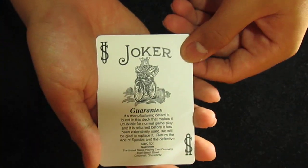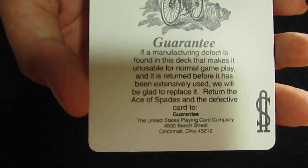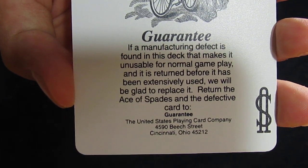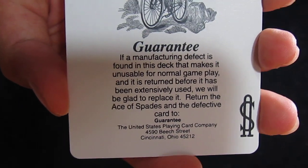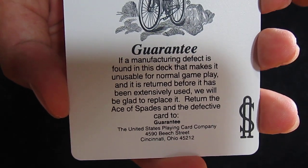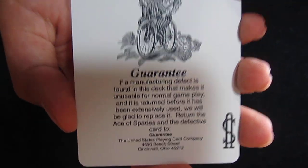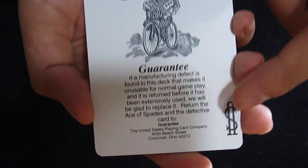Now I got the Joker, the Guaranteed Joker, and if you can read this, it basically says that if there's something wrong with these cards and I cannot play with them normally, then I just gotta send this Guaranteed Joker and Ace of Spades to this address.